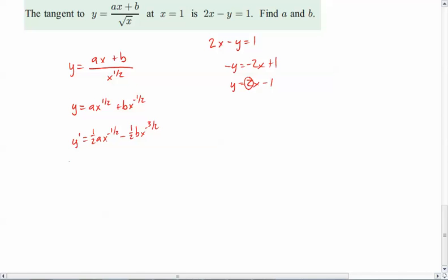So I'm going to write that down. It's going to be 2 equals 1 half times a times 1 to the negative 1 half minus 1 half times b times 1 to the negative 3 halves. Now of course they made it really nice by making it x equals 1 here because these two pieces essentially go out. So we're going to have 2 equals 1 half a minus 1 half b.